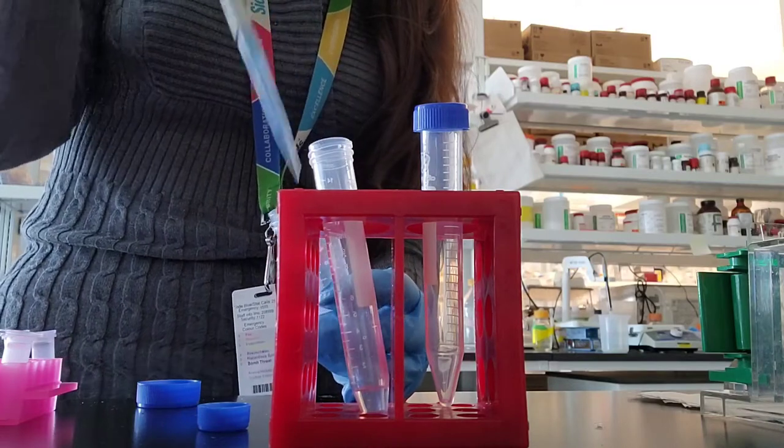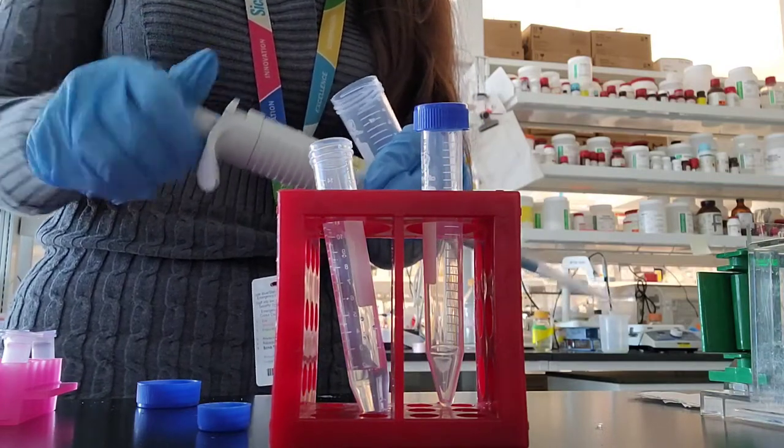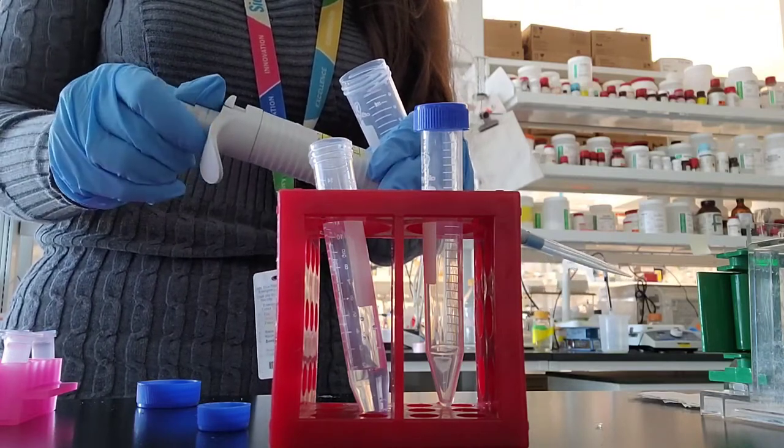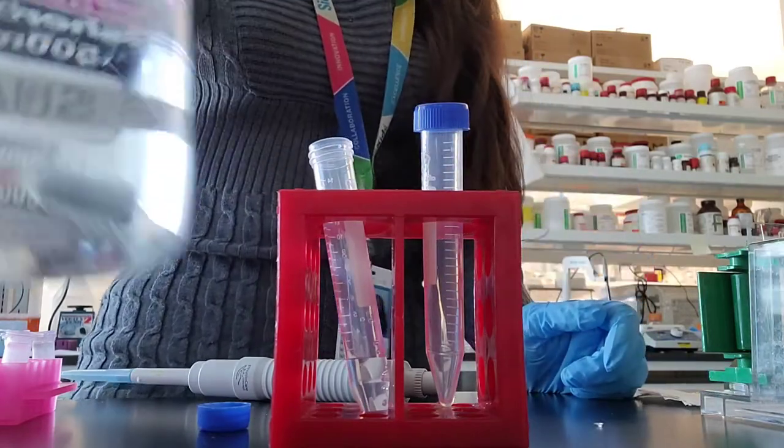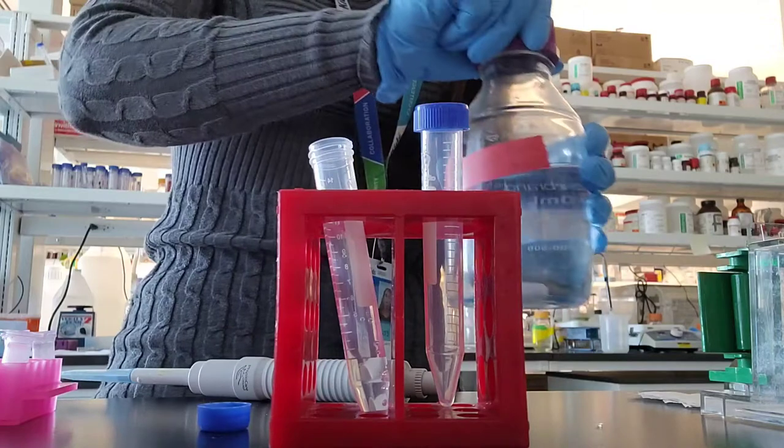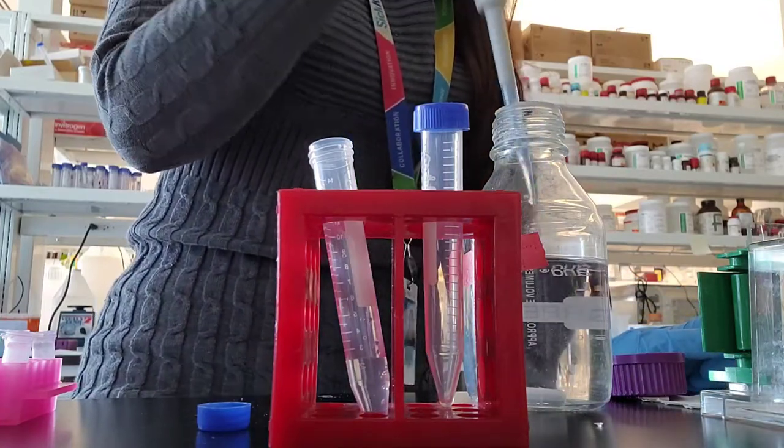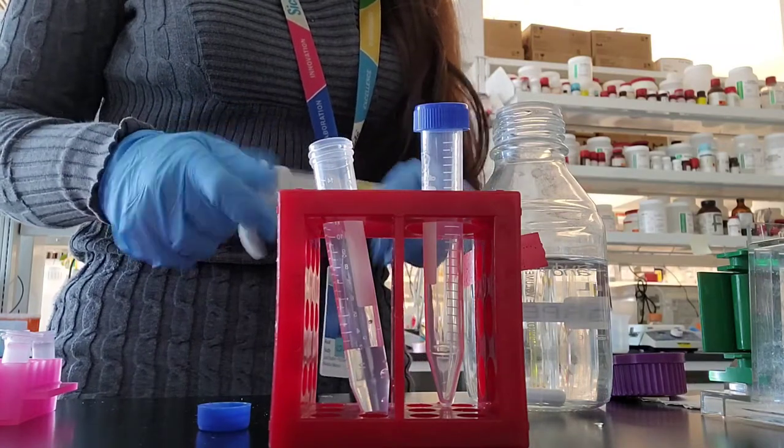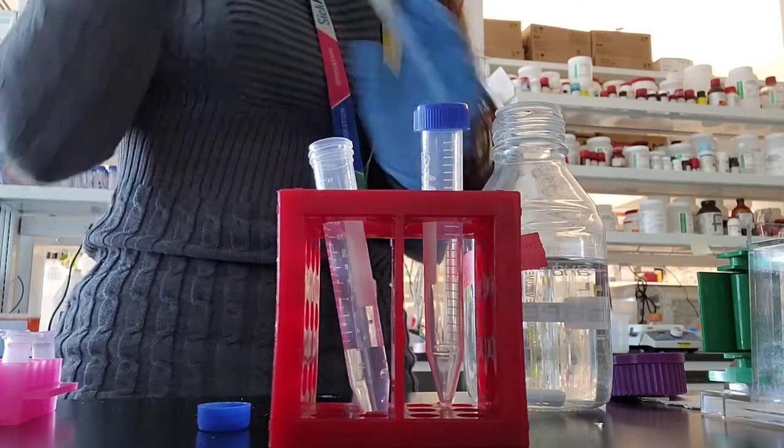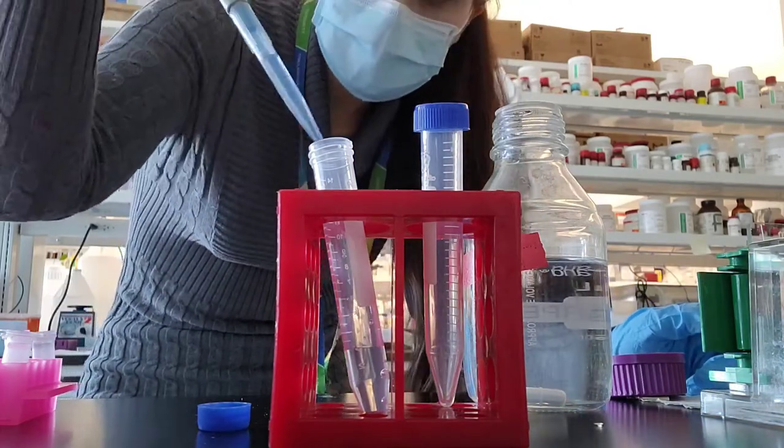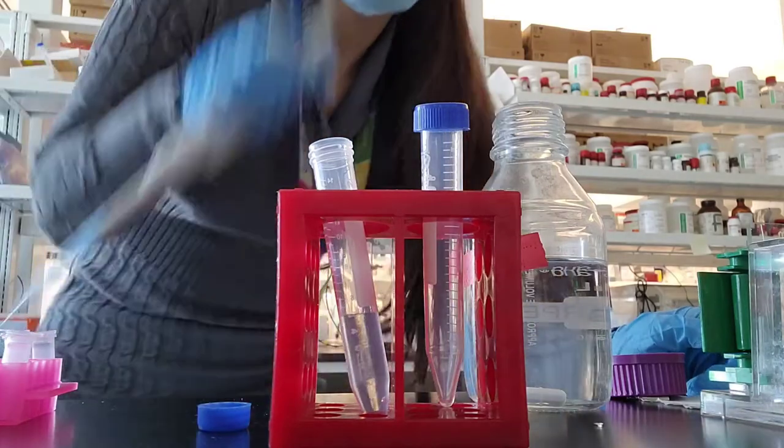Here's the recipe. It's very easy. For 15% gels you need 2.5 mils of water, 2.5 mils of your buffer for the lower gel which is 1.5 molar Tris. I'm going to put the details in the description. Then 5 mils of the bis-acrylamide 30% solution. So just to repeat: 2.5, 2.5, and 5. That's how I do it and it works really well.